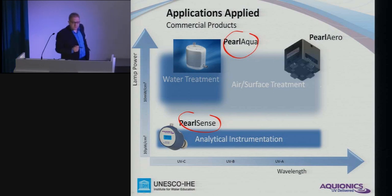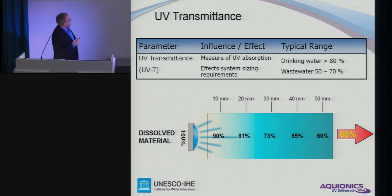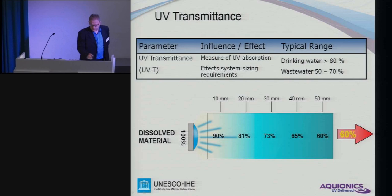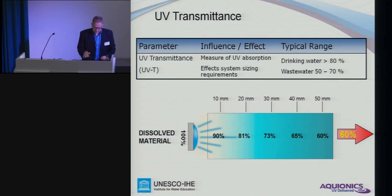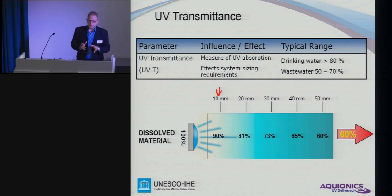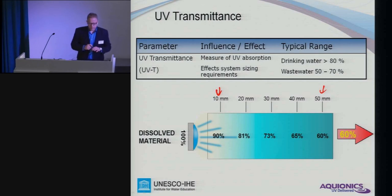UV transmittance was already mentioned this morning. Transmittance at 254 nanometers is basically how much light can travel through — penetrate the water in a layer of one centimeter. If after 10 millimeters we have 90%, then obviously it gets less and less. After 50 millimeters, we only have 60% left. That is important when designing UV disinfection systems, as it determines the distance between the lamps. A clean water system may have a wide distance; a wastewater system with lower quality needs a narrower arrangement of lamps. To select the correct system for a certain application, we need to know the UV transmittance.